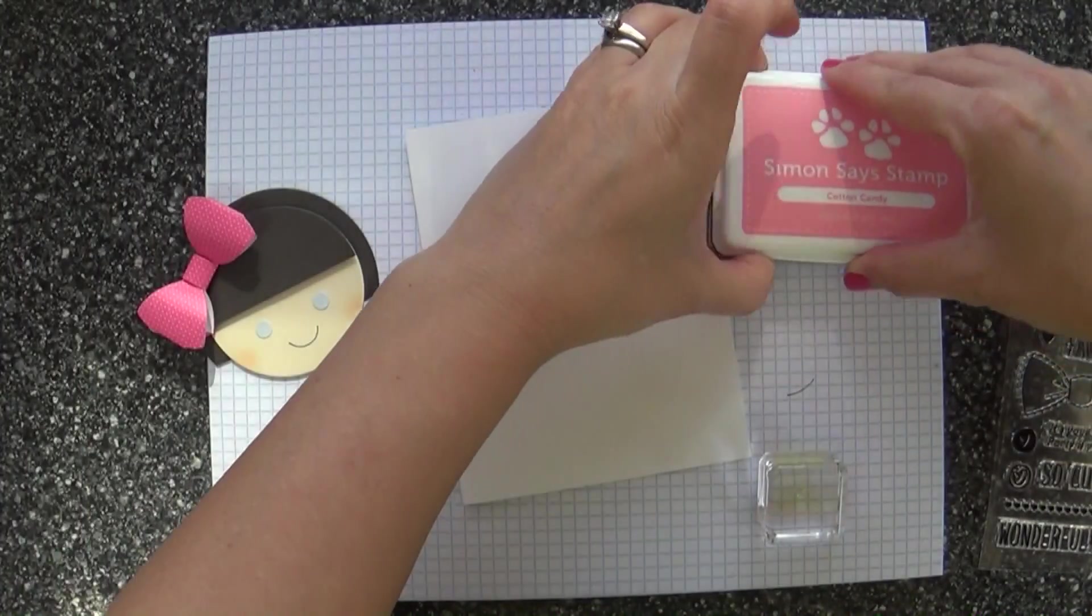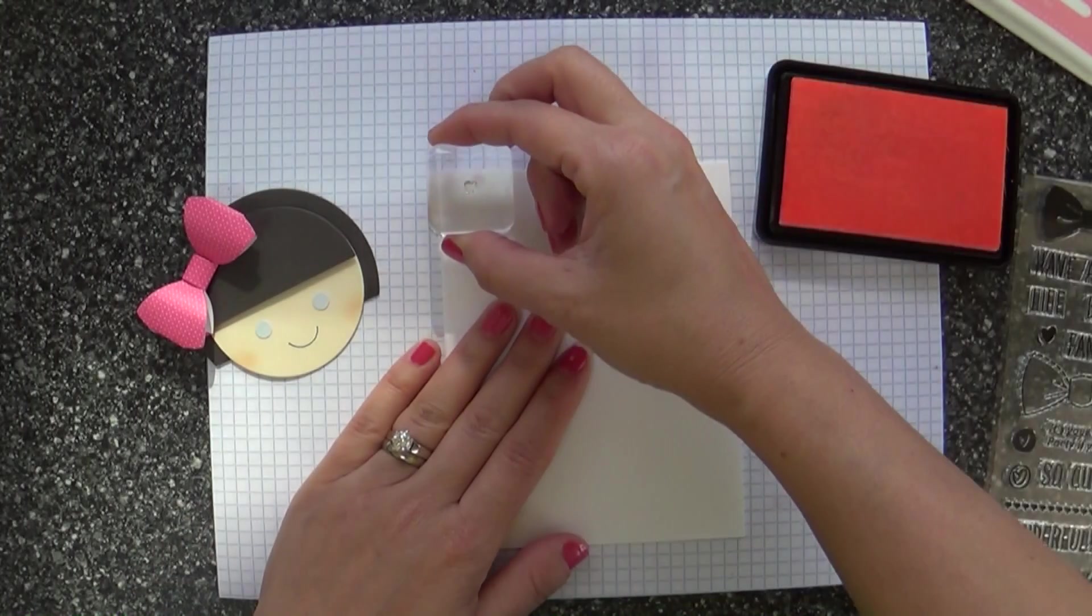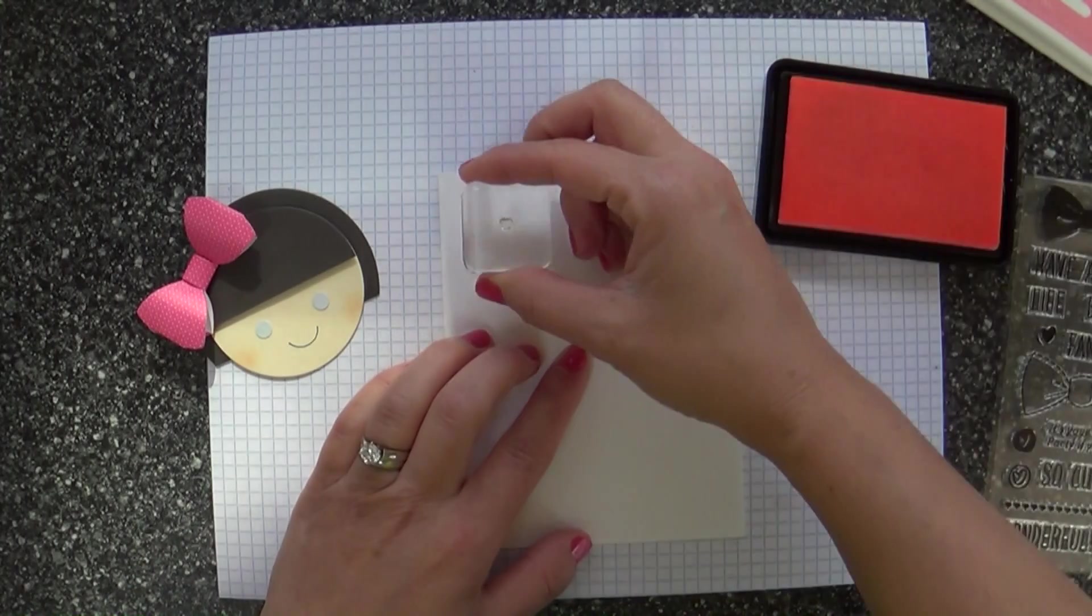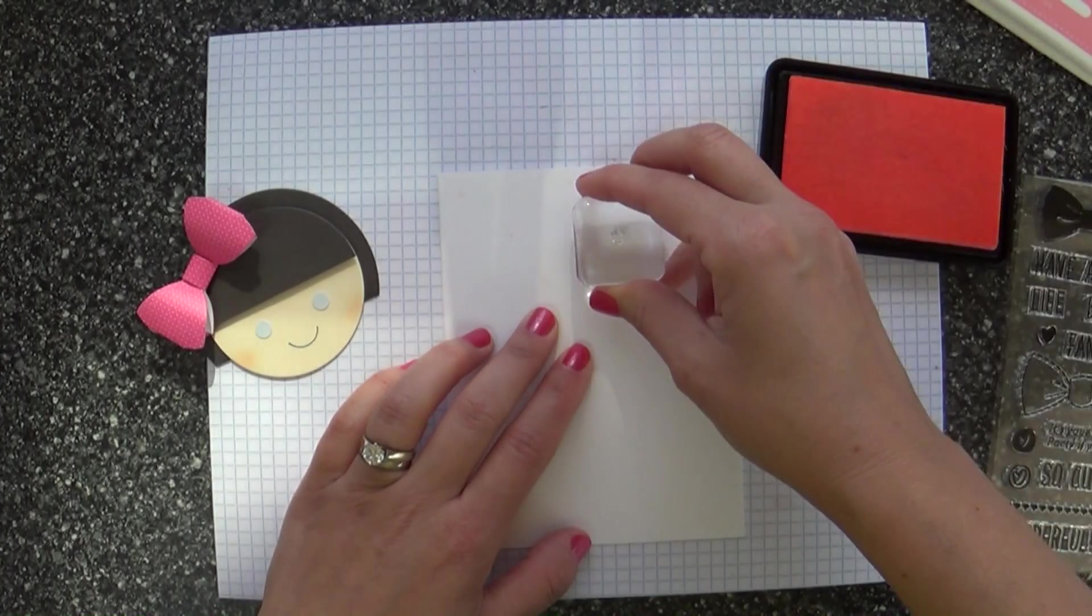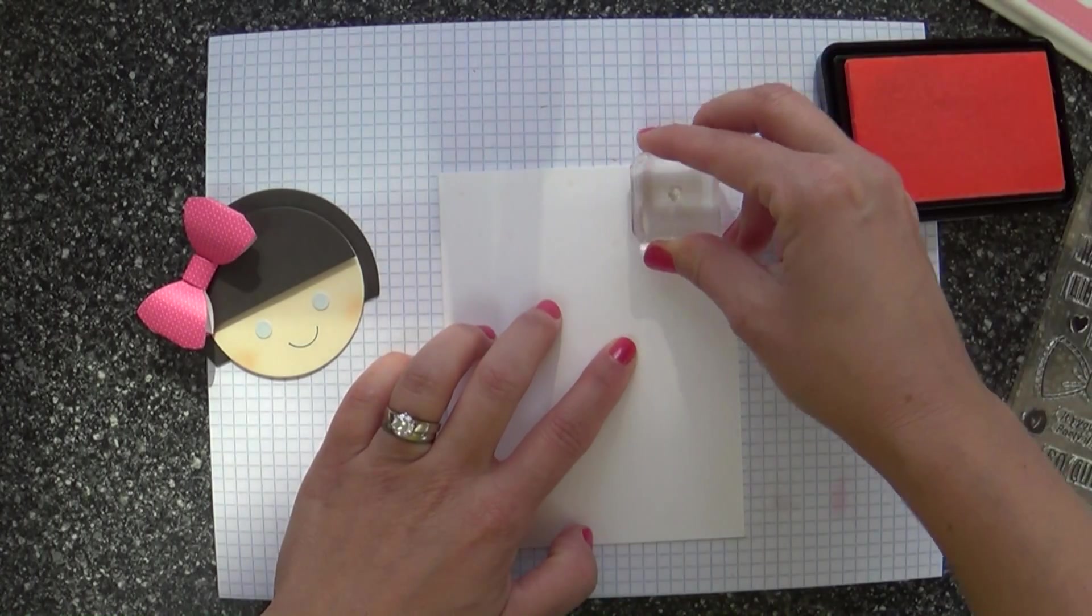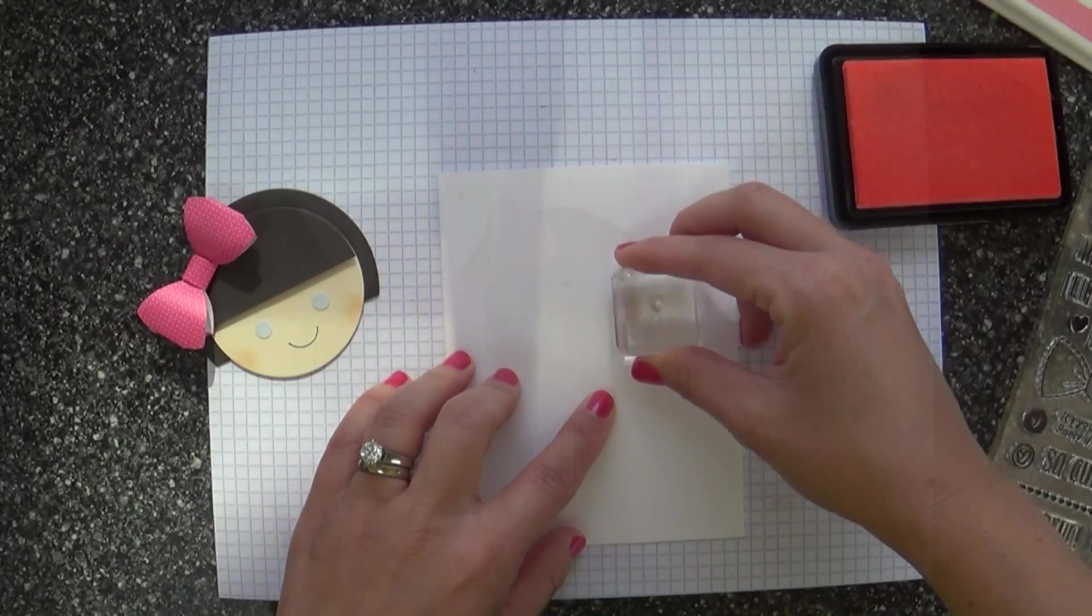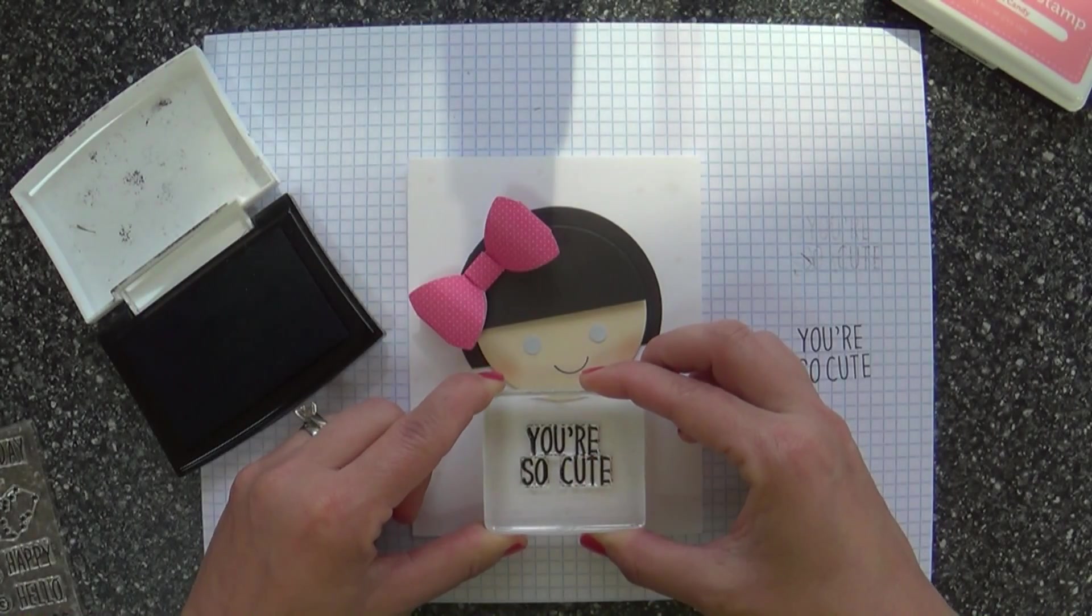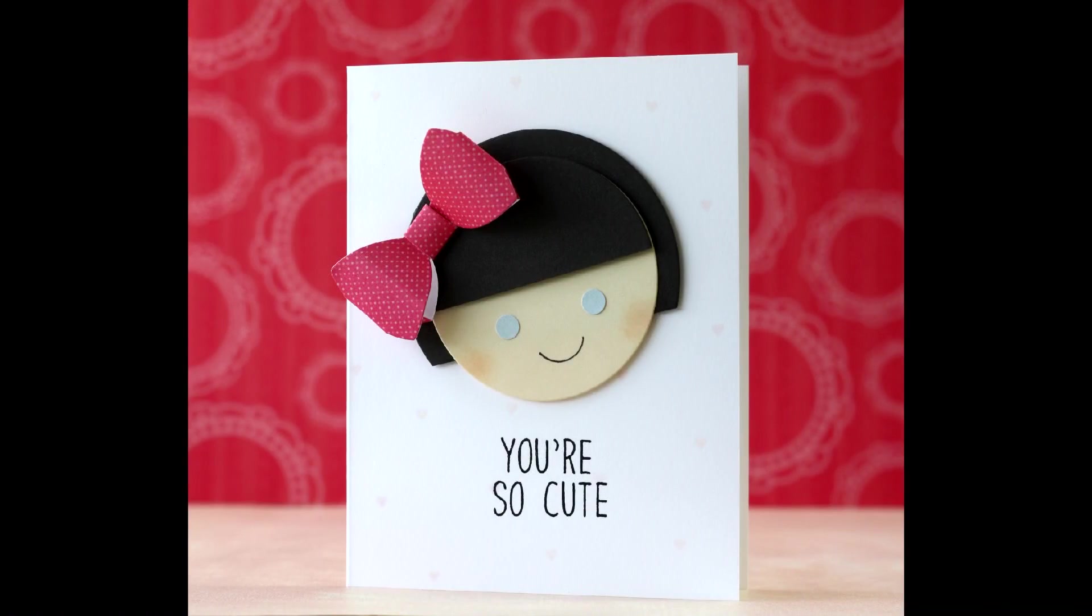Now I'm taking the little tiny heart from that Bow Tiffle stamp set. I'm going to stamp a random background. Now this cotton candy is super duper light. Maybe I should have stamped it a little darker, but I just love that subtle tiny little heart. It's not going to show up real well in the picture, but it's really cute. And then another fun sentiment from the Bow Tiffle stamp set. And there you have it. So fun and cute.